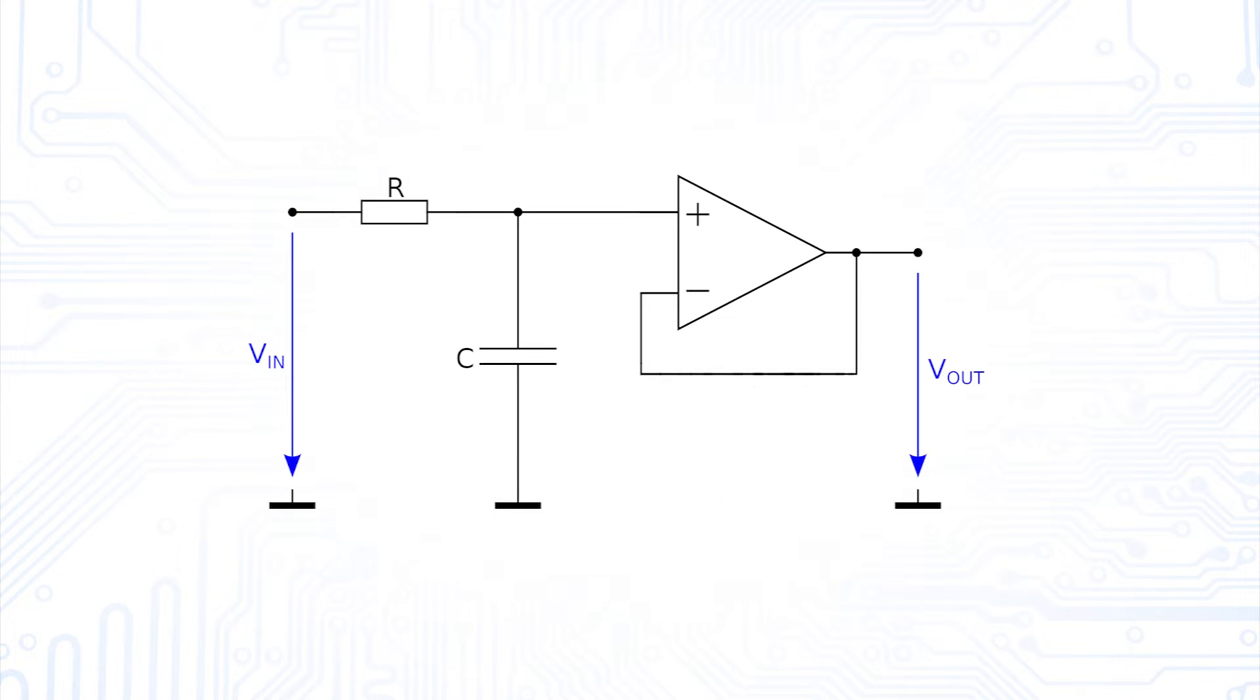If we want to set up the operational amplifier as the non-inverting amplifier, we simply add two more resistors to the circuit and we get the first-order active low-pass filter with gain.